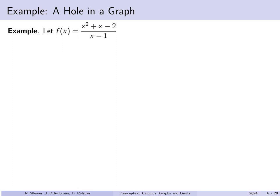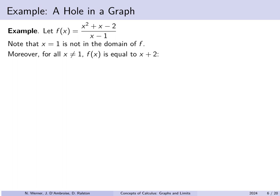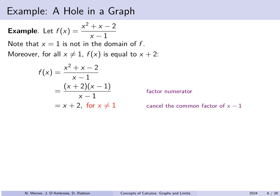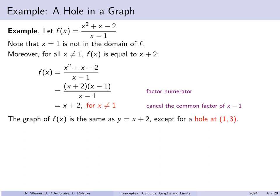Now let's look at the function f of x equals x squared plus x minus 2 over x minus 1. This is not defined piecewise, but x equals 1 is not in the domain of f. Is it a vertical asymptote or is it a hole? For x not equal to 1, f of x equals x plus 2, because the numerator factors as x plus 2 times x minus 1, which cancels. So we have a hole at the point 1 comma 3, and we put an open circle to indicate this single point has been removed from the graph.